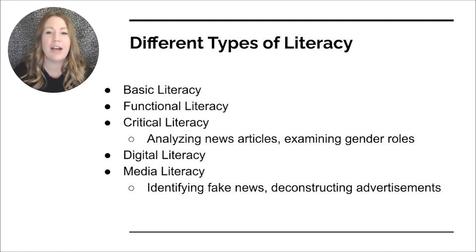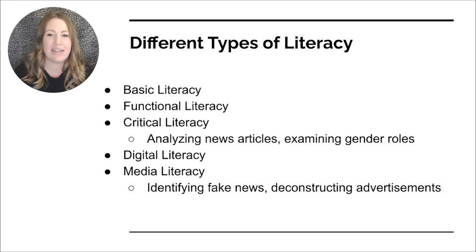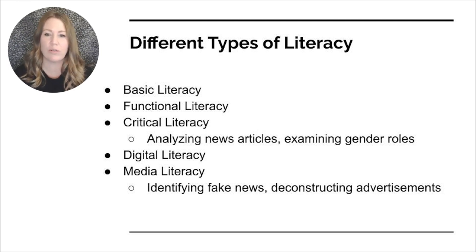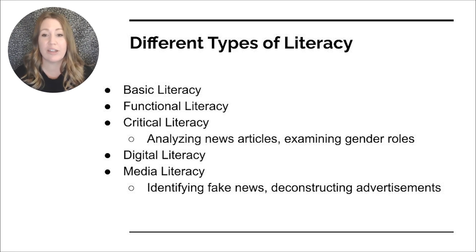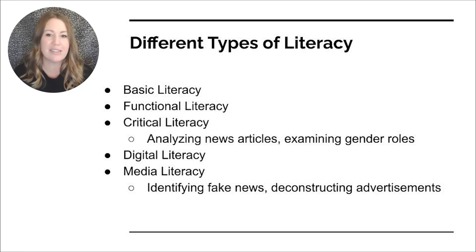Critical literacy goes beyond the mechanics of reading and writing. It involves analyzing text, recognizing biases, questioning assumptions, and understanding how texts are constructed to convey meaning and influence opinions. An example would be analyzing news articles — critically examining news articles from different sources to identify bias, evaluate evidence, and understand the underlying messages. Critically literate individuals might compare news coverage of the same event from different outlets to understand how language and perspective can shape the narrative.